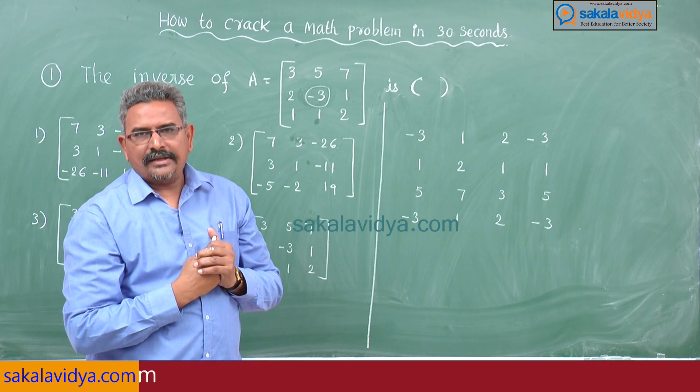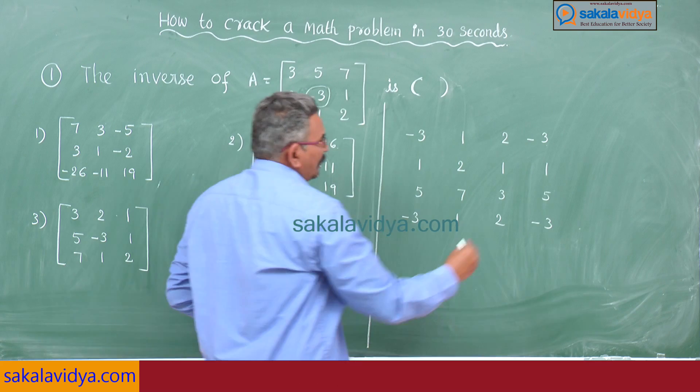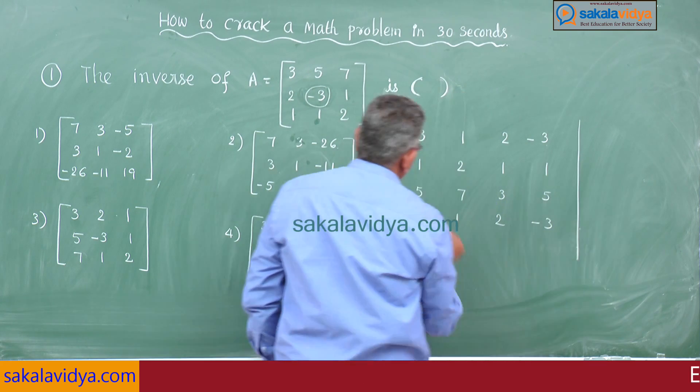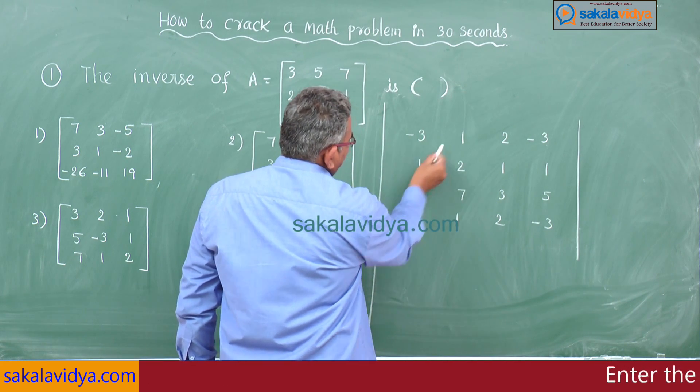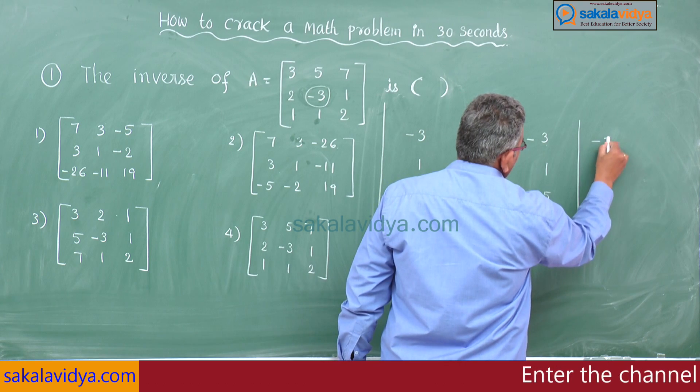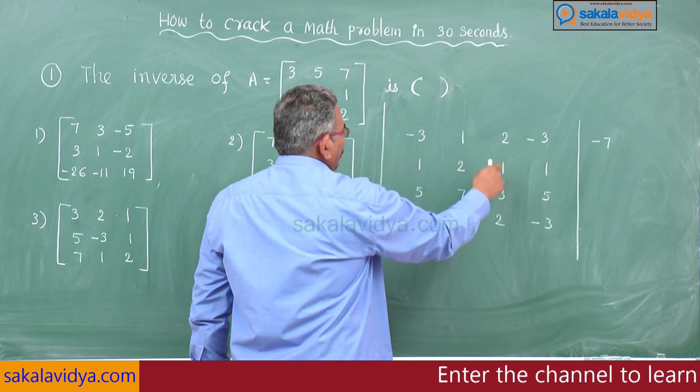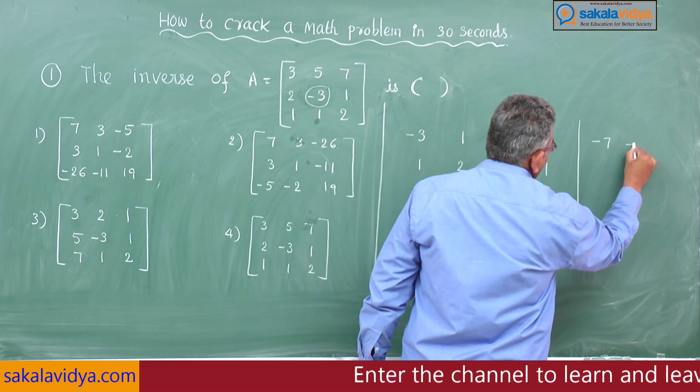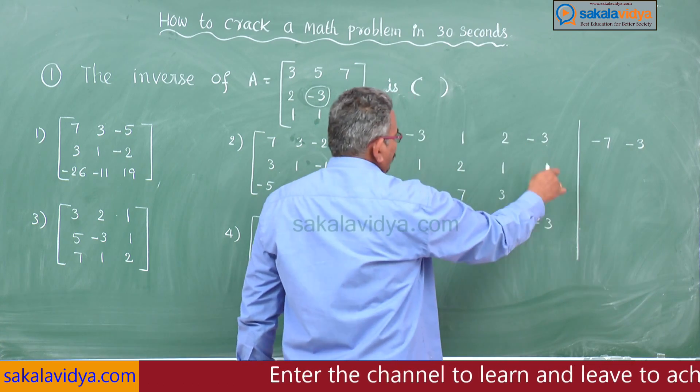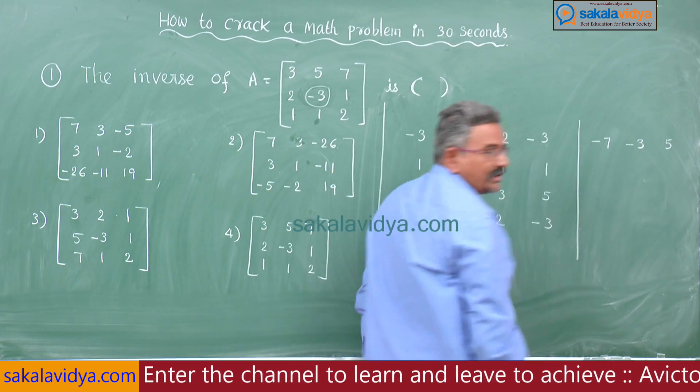I write here: -6 minus 1 is -7, 1 minus 4 is -3, 2 plus 3 is 5. Correct, checked.